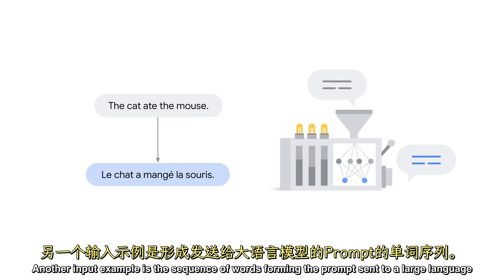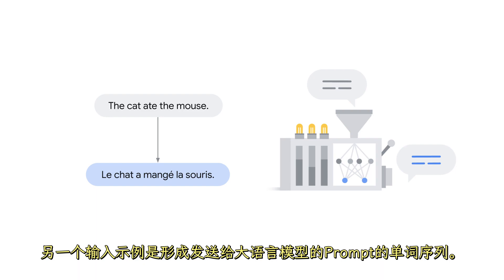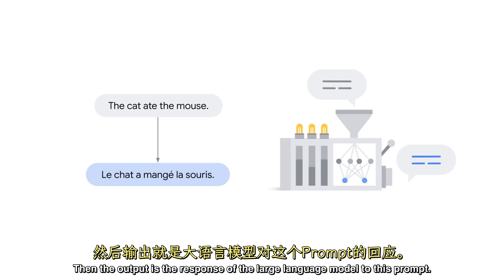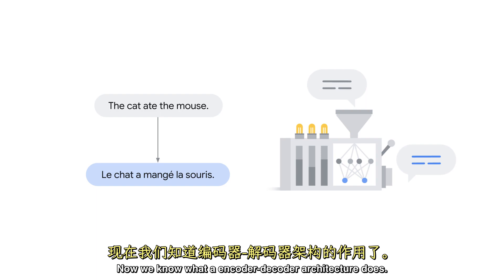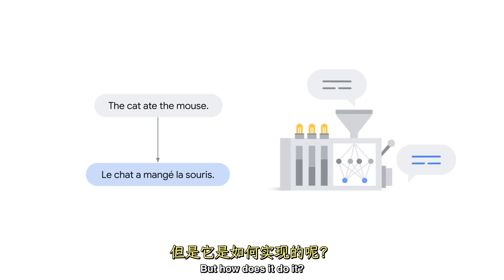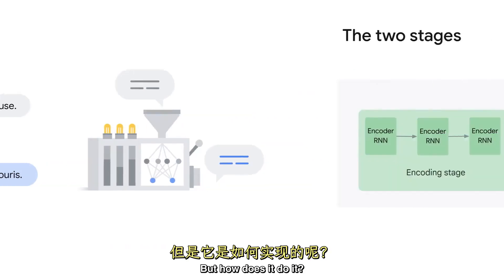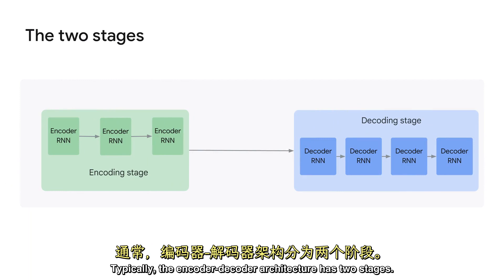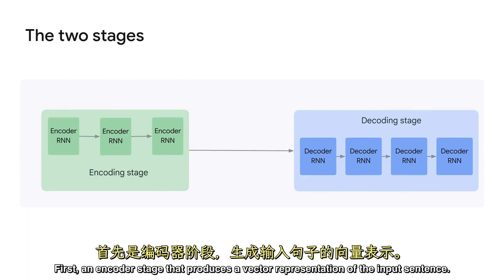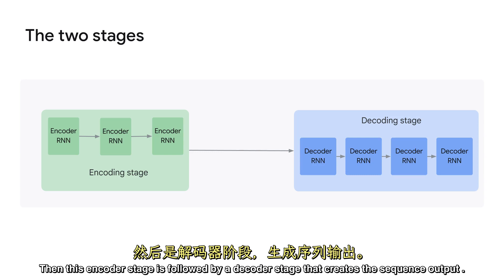Another input example is the sequence of words forming the prompt sent to a large language model. Then the output is the response of the large language model to this prompt. Now we know what an encoder-decoder architecture does, but how does it do it? Typically, the encoder-decoder architecture has two stages. First, an encoder stage that produces a vector representation of the input sentence. Then this encoder stage is followed by a decoder stage that creates the sequence output.